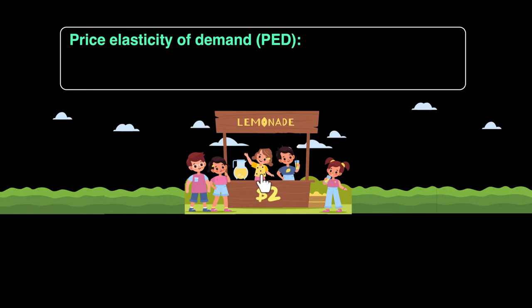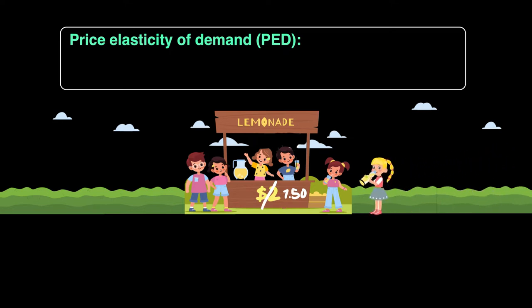Let's assume it's a hot summer day and you and your friend set up a lemonade stall on your street, pricing it at two dollars a glass. You see three people come in and drink lemonade, but you want more customers. So you decide to slash the price to one dollar fifty — a fifty-cent reduction — and you see an influx of more friends come out.